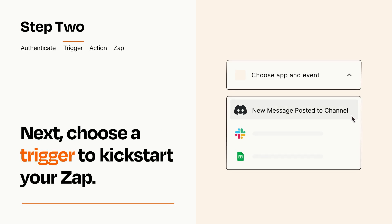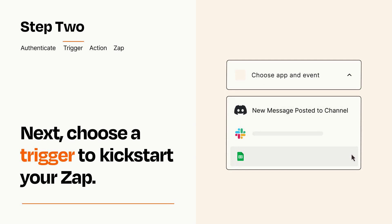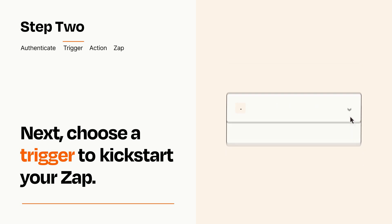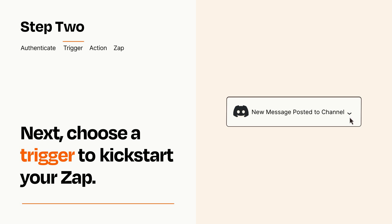Now let's set up your trigger, which is the event that starts your Zap. Pick the trigger event that you want from the list. When you set up this step, your Zap will pull in test data from your trigger app that you'll see later when setting up your action app.